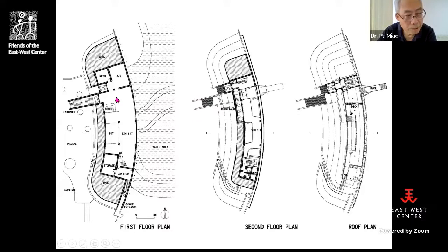Here is the floor plan: the first floor is also the underground floor, followed by the second and third floors. On the first floor the underwater window is located. On the second floor there is a sunken courtyard. Finally on the roof there is an observation deck.